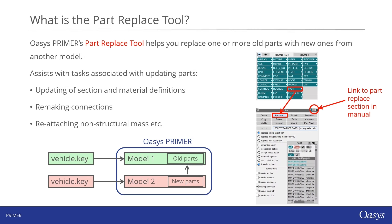So what is the part replace tool and how can we find it? The tool helps replace one or more old parts with new ones from another model and assists with tasks associated with this process. This might include updating section and material definitions, remaking connections, or ensuring that non-structural masks get correctly reattached to new parts. The part replace tool can be found under the Part keyword, and once the part replace panel is open, more details can be accessed via the question mark link to the manual.